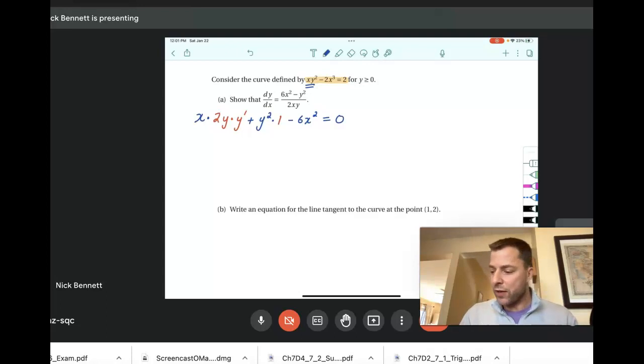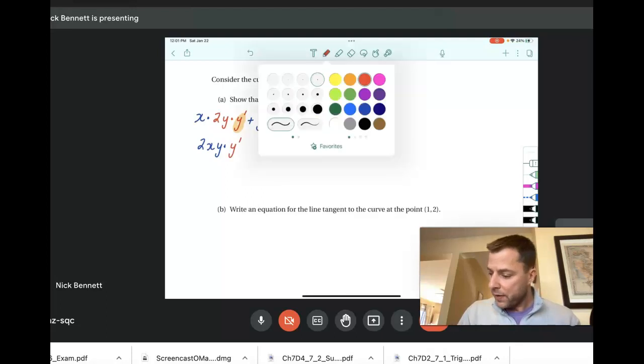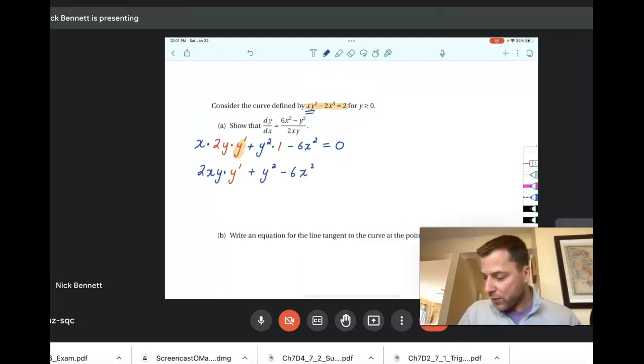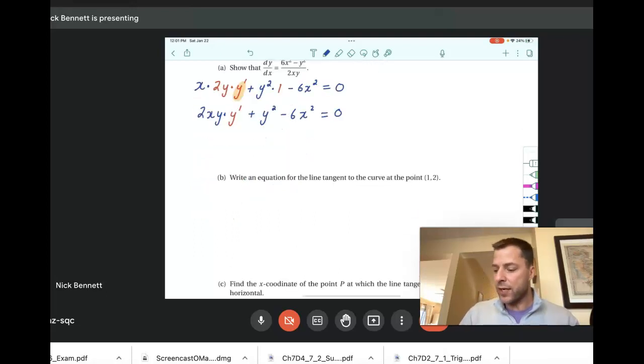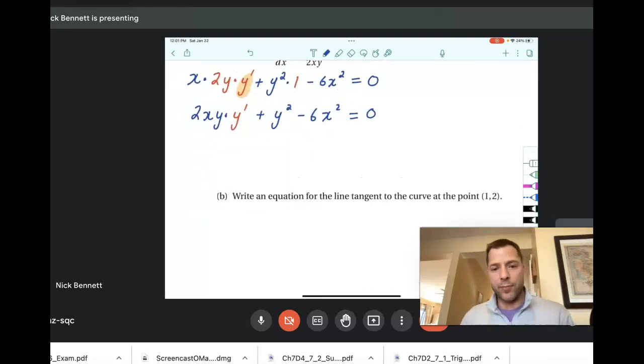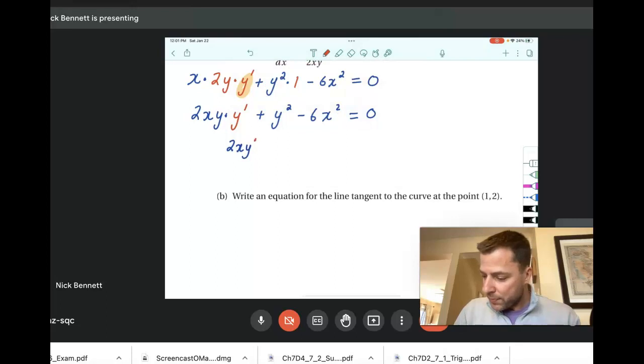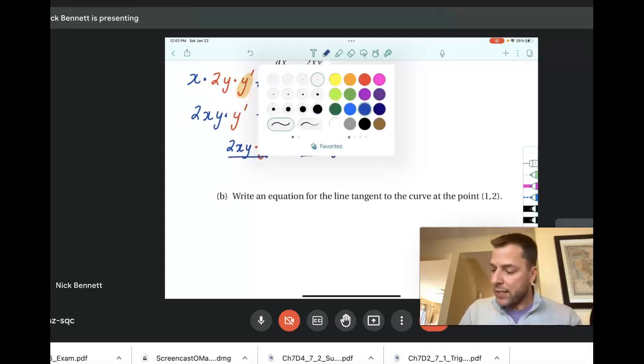So what we're going to do now is we're going to solve this for y prime. But I'm going to go ahead and rewrite this as 2xy times y prime, so I can just see it a little better. Now remember, this is a tutorial on an exam. I'm not going to be changing colors and I'm going to be moving quickly and efficiently. So we're going to solve for that red term there, y prime, by moving the y² over by subtraction and moving the x² term by adding. So we have 2xy times y prime equals 6x² minus y².